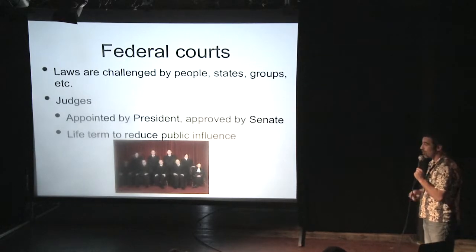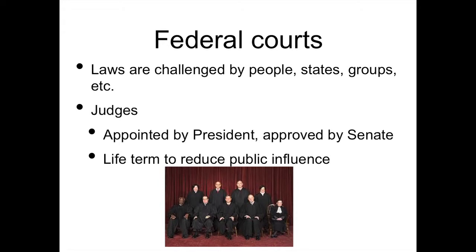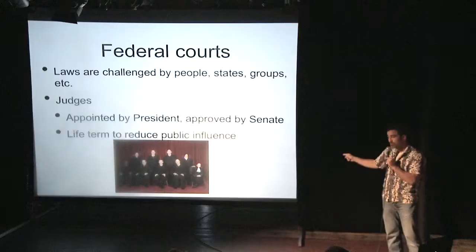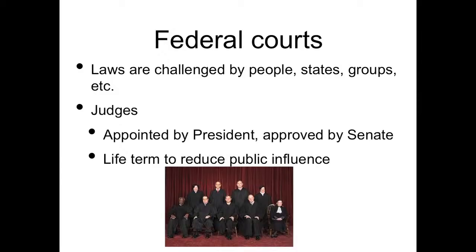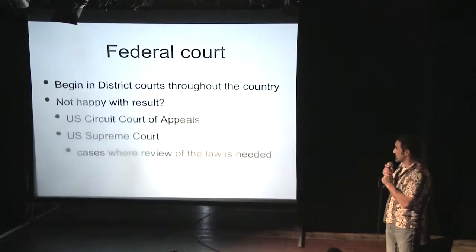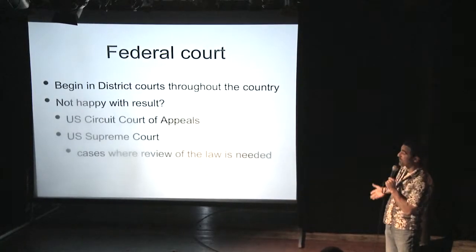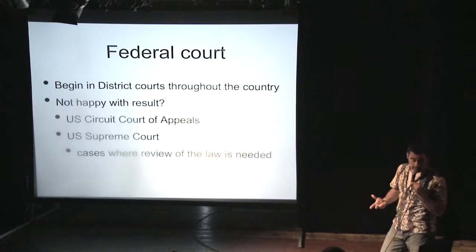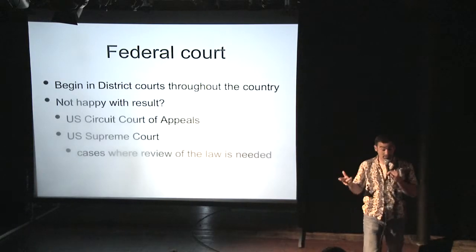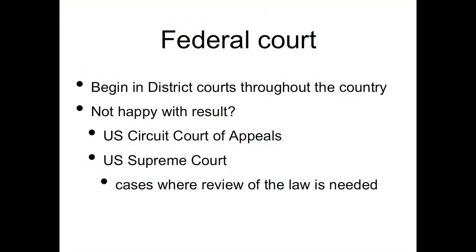In the federal courts, laws can be challenged by people, states, groups, etc. The judges are appointed by the president and then approved by the Senate, and they have a life term to reduce public influence. This is the Supreme Court, where there are nine Supreme Court justices. In federal court, a case will begin in district courts throughout the country. If you're not happy with the result, then the U.S. Court of Appeals hears it, and then it goes on to the U.S. Supreme Court. Typically the cases are heard where the law is most needed, like abortion or election laws.